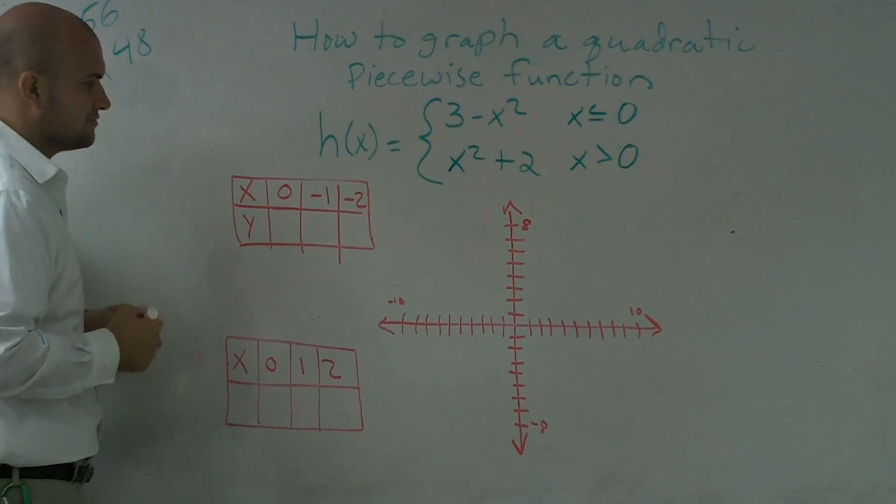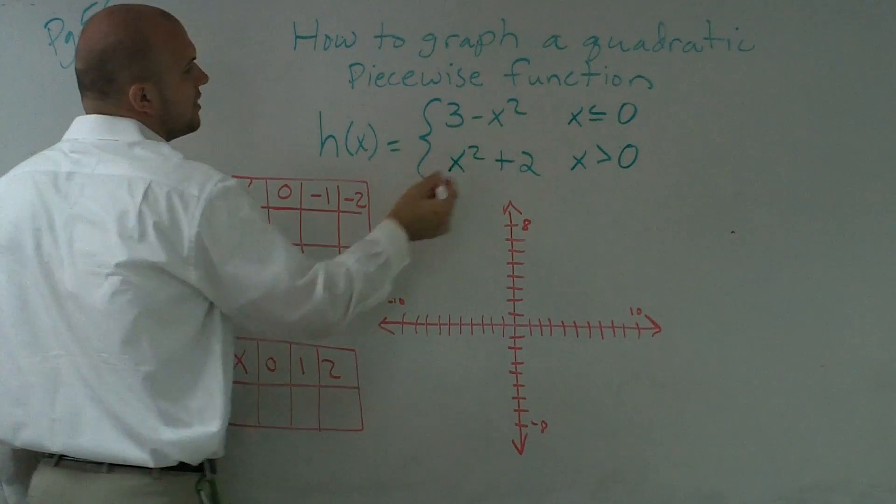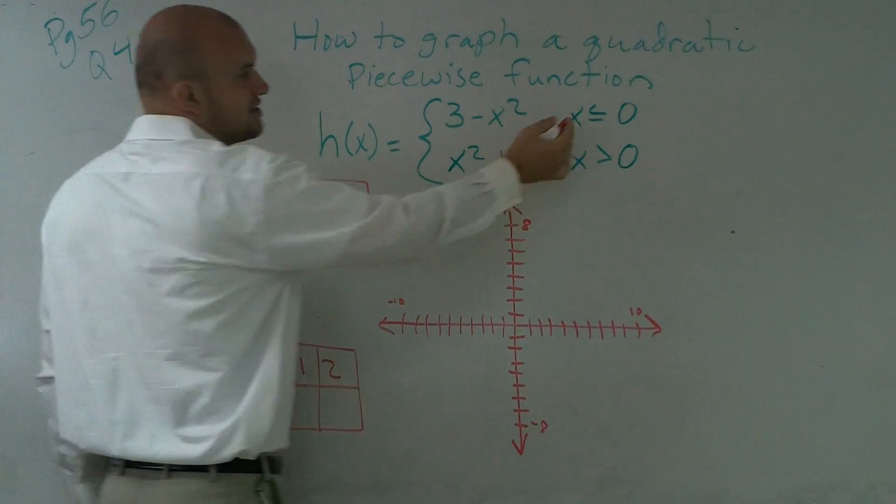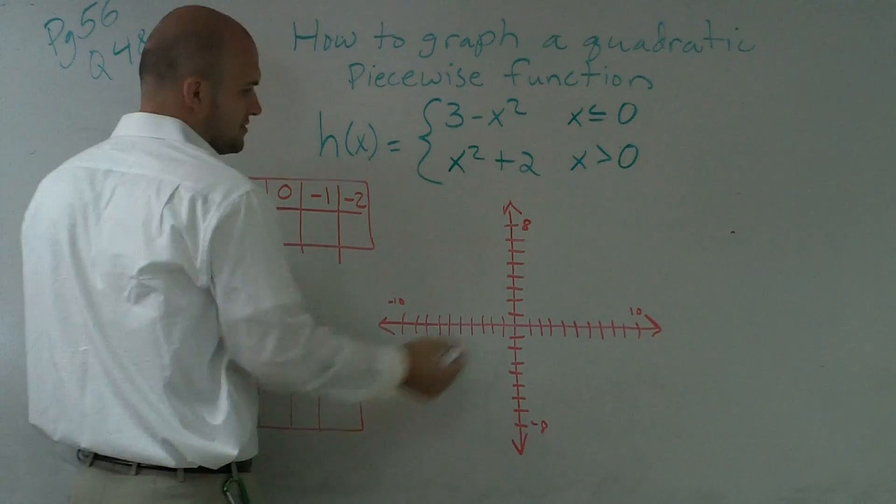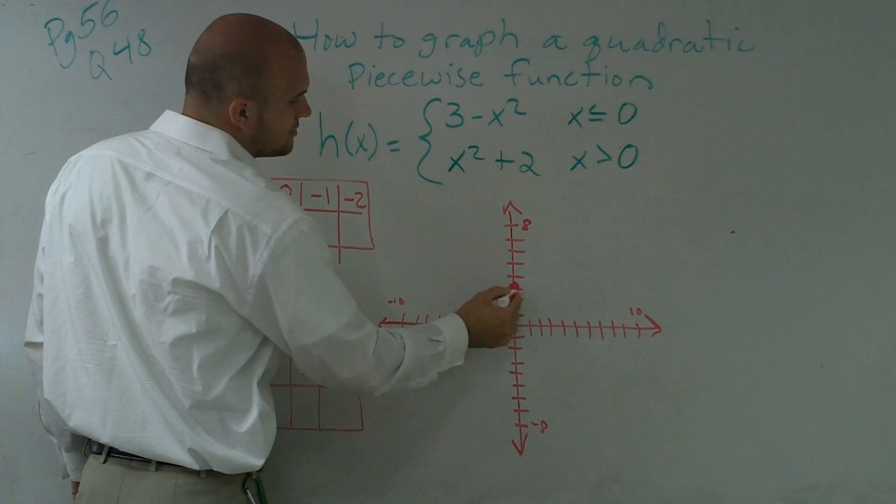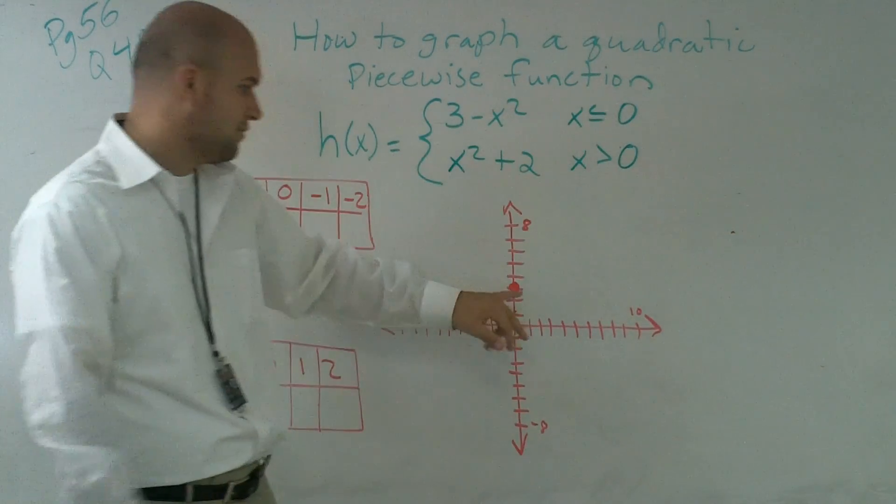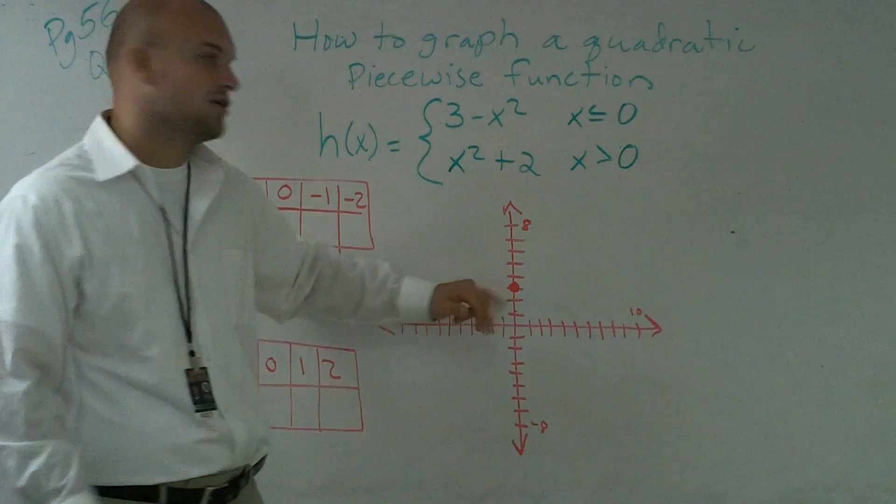So first of all, I'll say, alright, when x equals 0, what is it going to be? So if I put in a 0 in for x, I get 3. And notice this is x is less than or equal to 0. So I go up to 3, 1, 2, 3. And I'm going to do a filled-in circle because I know that this is less than or equal to, so therefore this value is part of the function.